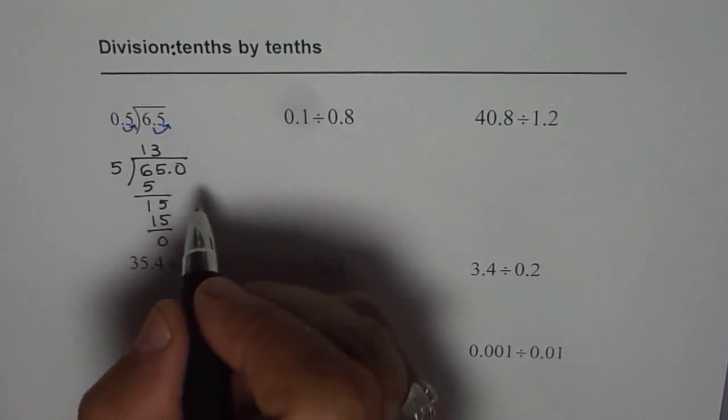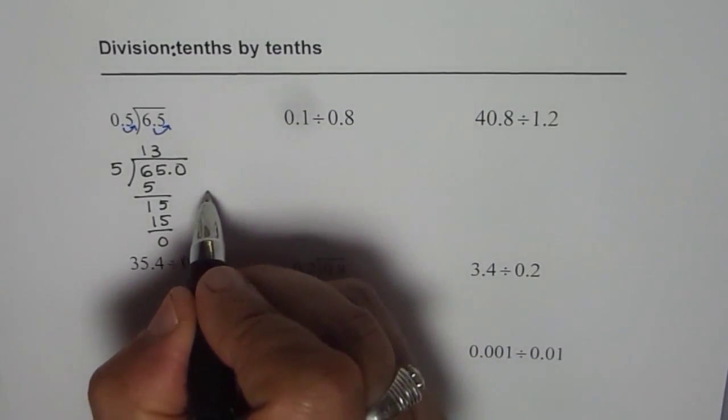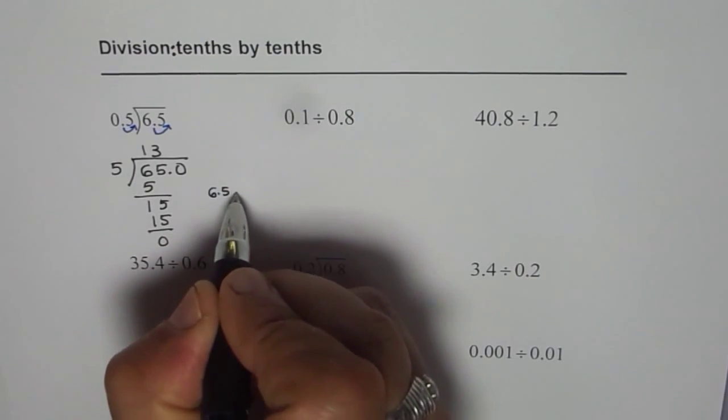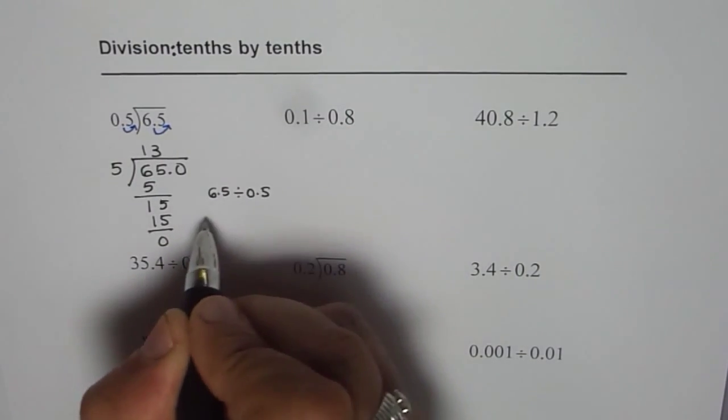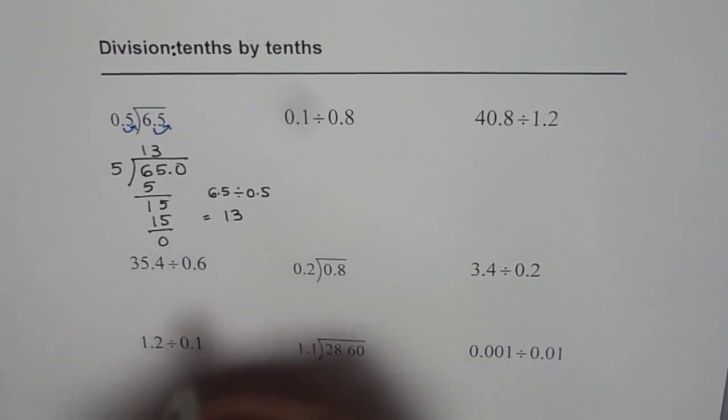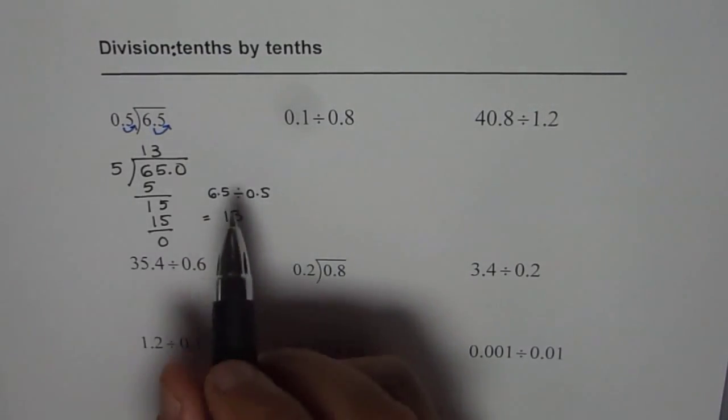So that is how we can do it. Now we can write down the answer as 6.5 divided by 0.5 is equal to 13. Let me do one more.